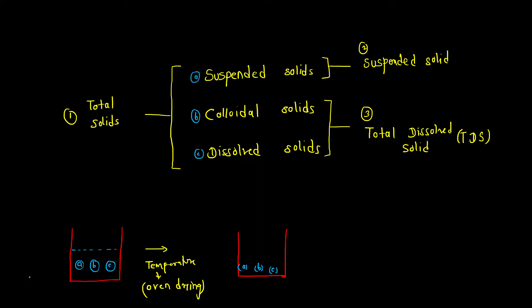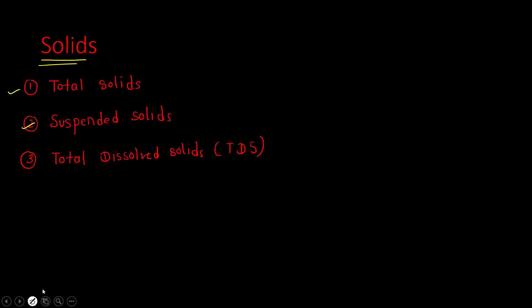In this process, in the first step we take only the raw water sample — no filtration or any other operation. It is subjected to oven drying so the water evaporates and all three impurities remain. The solids present in this case are called total solids — that is, all three solids are present.